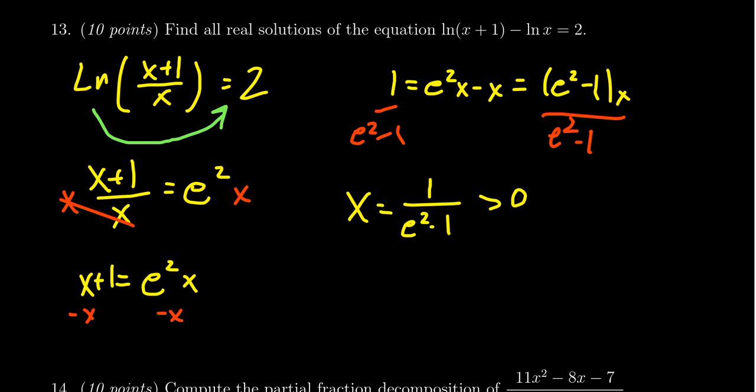Well, e is bigger than 2. It's 2.7-something, between 2 and 3. So e squared is bigger than 4. 4 minus 1 is 3. So e squared minus 1 is still positive. So we have a positive value.